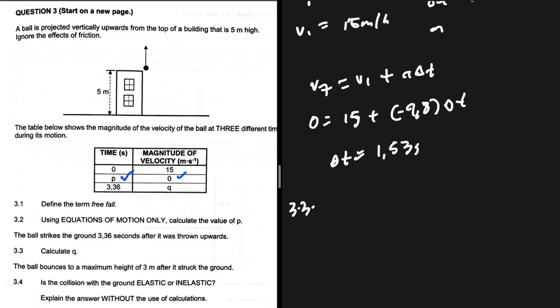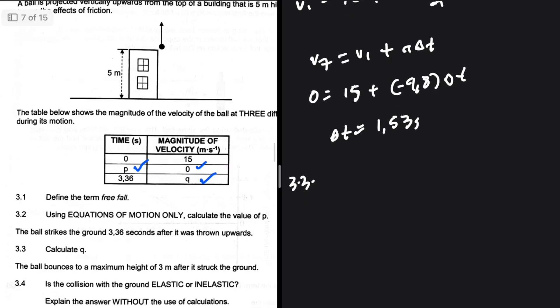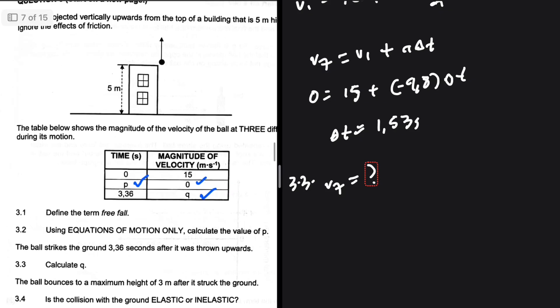3.3: The ball strikes the ground 3.36 seconds after it's thrown upwards. Calculate q. So 3.36 seconds is corresponding with the velocity of q, the time where it strikes the ground. What are we looking for? We're looking for vf, which will be our q.